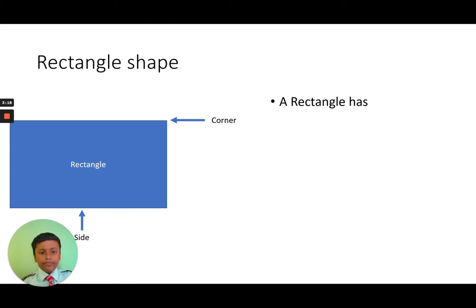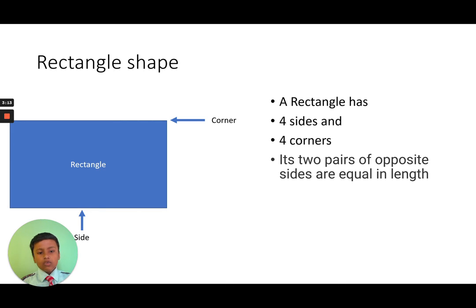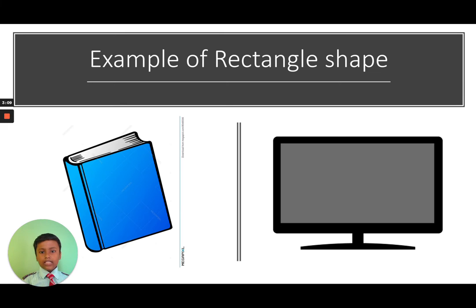Rectangle shape: A rectangle has four sides and four corners. Its two pairs of opposite sides are equal in length. Examples of rectangle shapes include books and TVs.